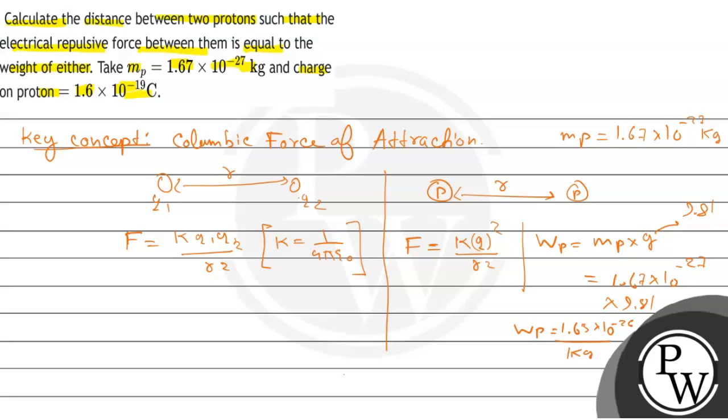Right. So, question mein given it is, the repulsive force between them is equal to the weight of either, so F is equals to Wp. Means K Q^2, kyunki both have equal charges, by R square is equals to Wp, that is 1.63 × 10^-26. Right? So going to the next page.